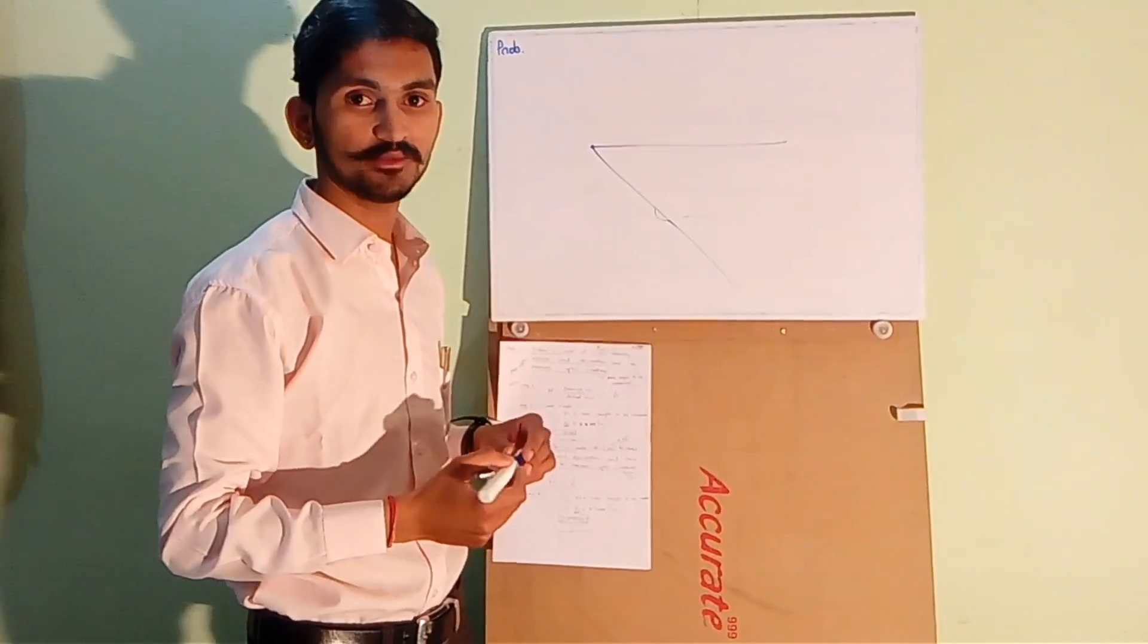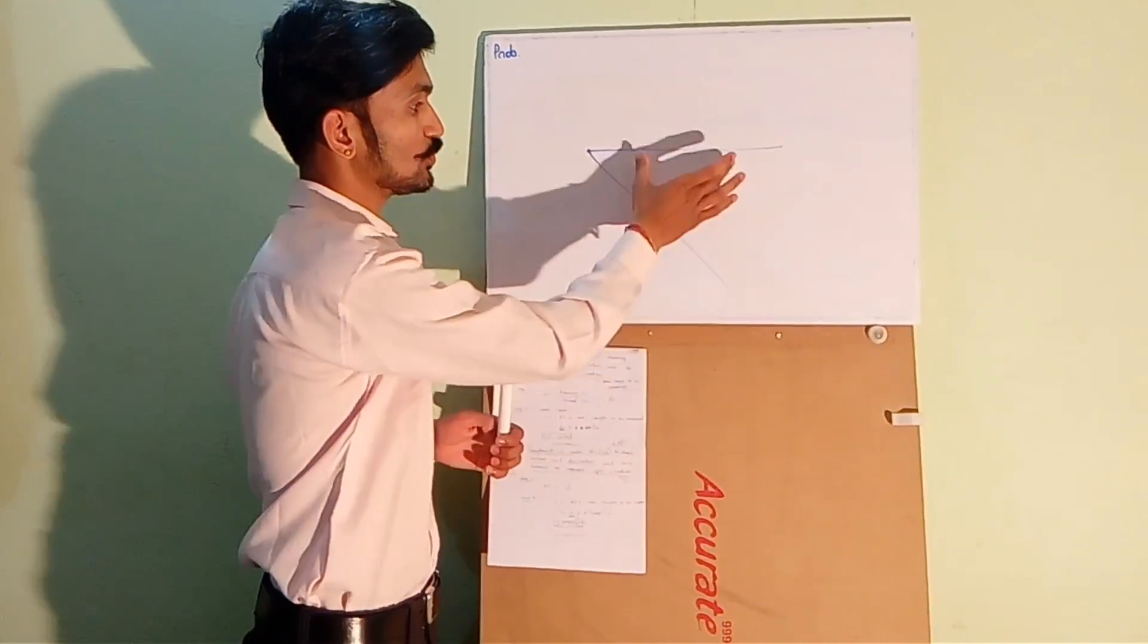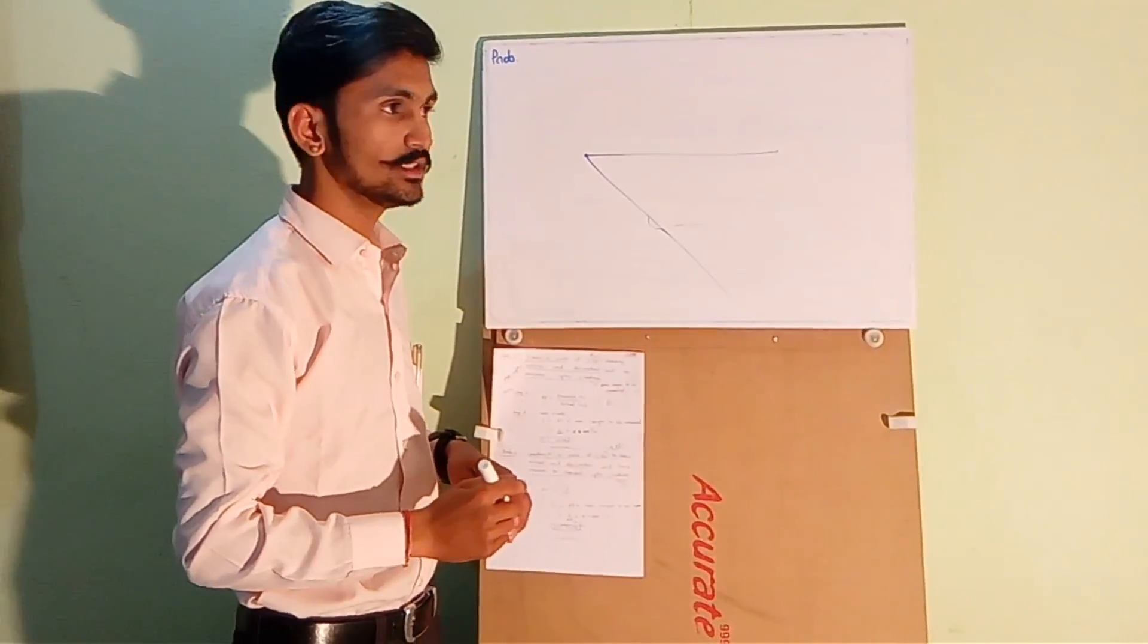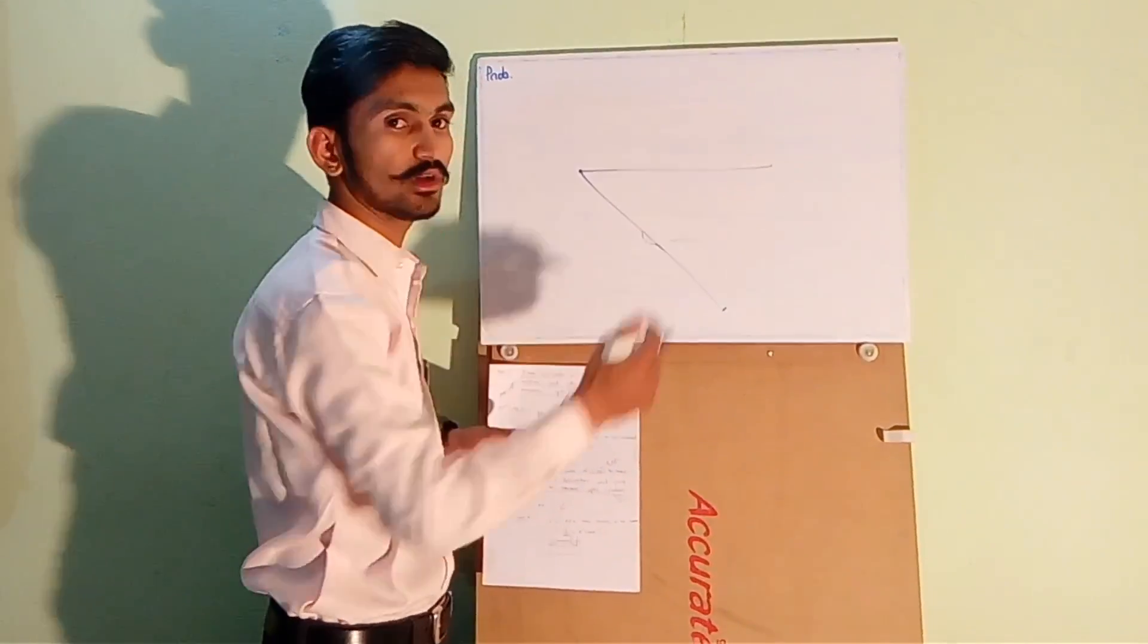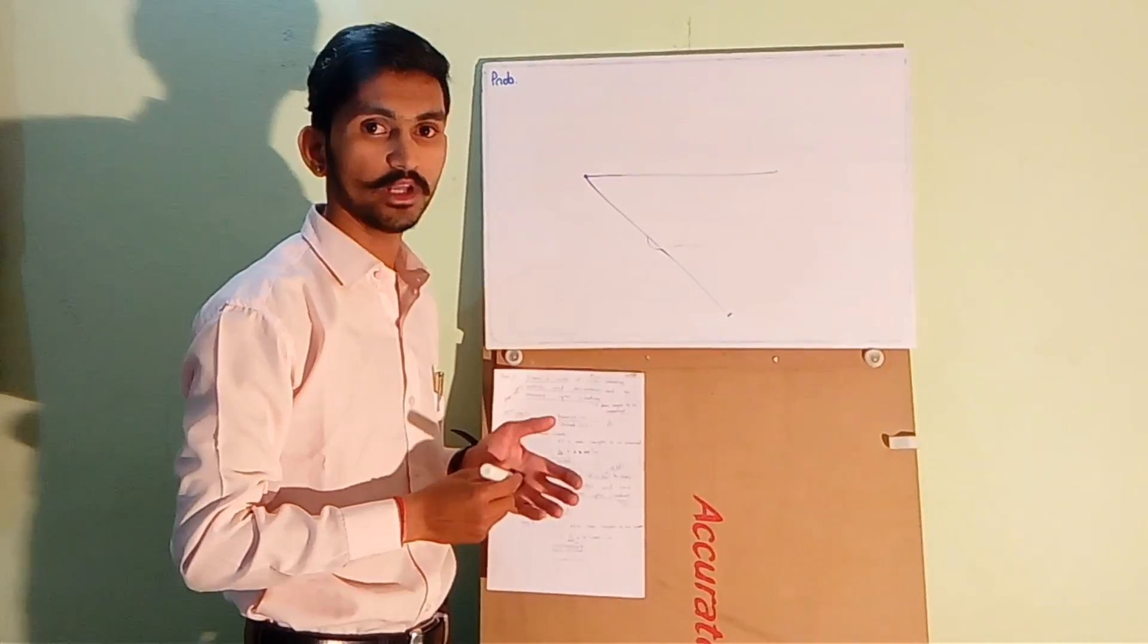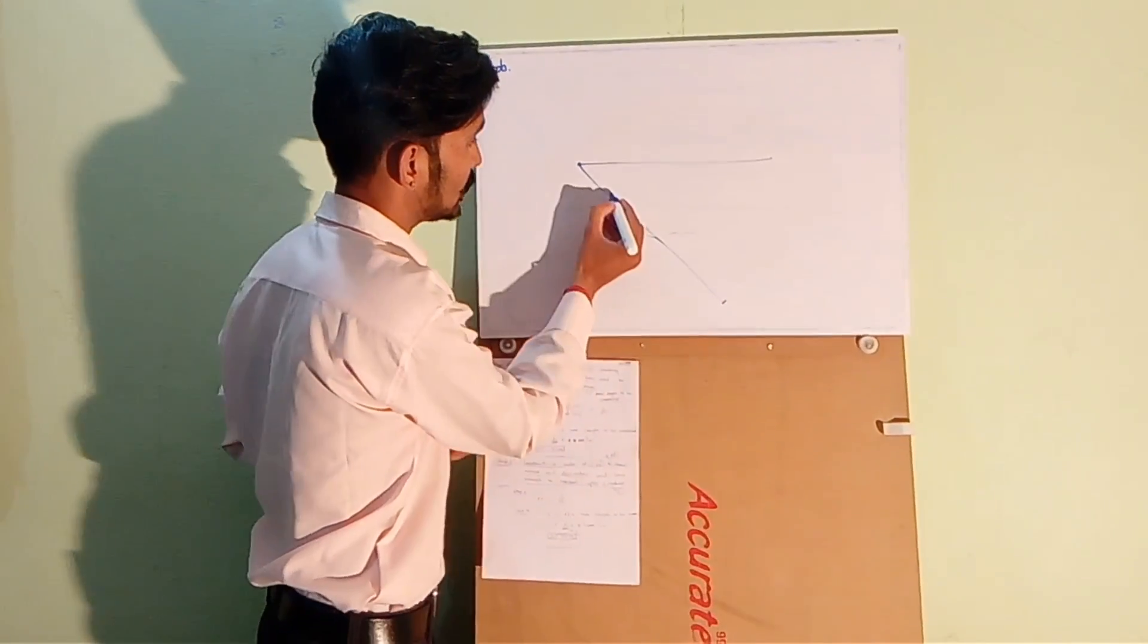Now we have this line of 12.5 centimeter and we want to show the maximum of 4 meters. The unit will be in meters, so we will divide this line into 4 equal parts. Each part will be showing 1 meter.